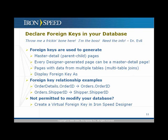Similarly, declare foreign keys in your database. Foreign keys are used to generate master-detail pages where you might show, for example, an order and then multiple line items for that order — that's the one-to-many relationship. In fact, every page in Ironspeed Designer is automatically a master-detail page, and you can have many levels: parent, child, grandchild, great-grandchild, and so forth. Ironspeed Designer needs to know the foreign key relationship to do this. With database views, you may not have explicitly declared foreign keys, so just like with primary keys, you can instruct Designer through a virtual foreign key mechanism to treat particular fields as foreign keys and Designer will generate code accordingly.